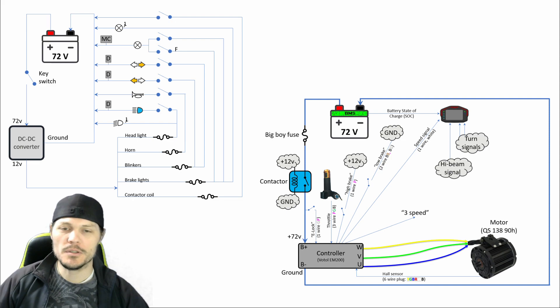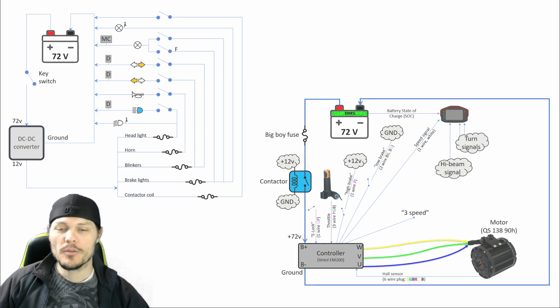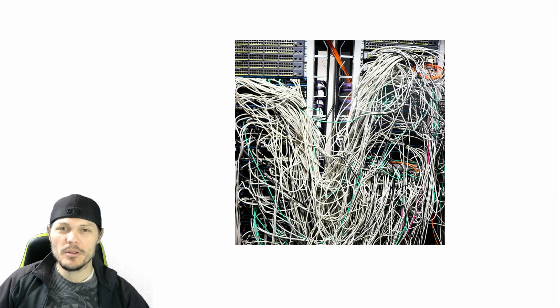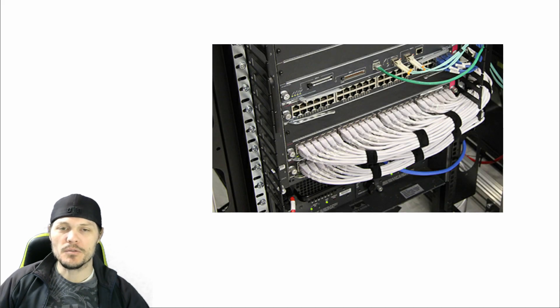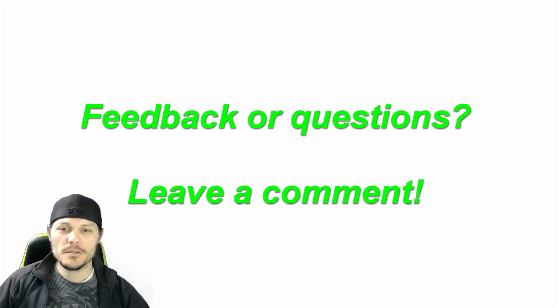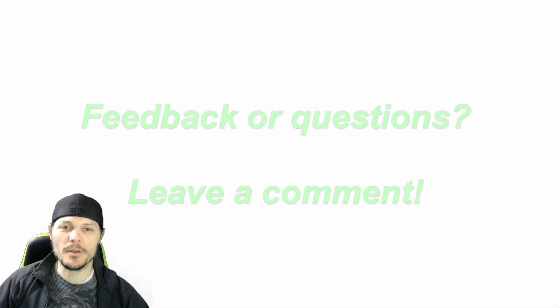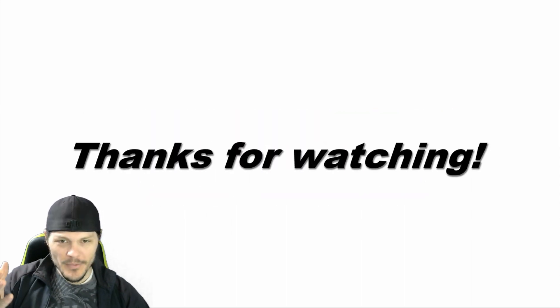So there you have a somewhat simplified approach to the 12 volt system and the 72 volt system. Hopefully that's helpful to someone out there. Even if the wiring might seem a little complicated, it's really not so bad once you break it down into the individual circuits. If you have any feedback or questions, leave them in the comments section. I'll try my best to answer, but we might also get a better answer from someone on the internet. If you'd like to follow my project, be sure to subscribe, and as always, thanks for watching.